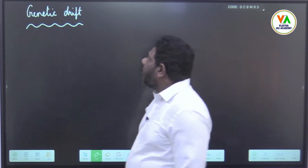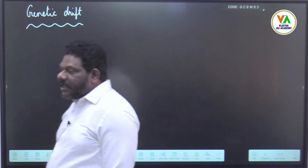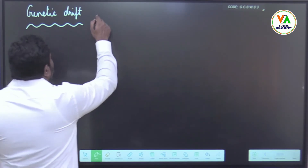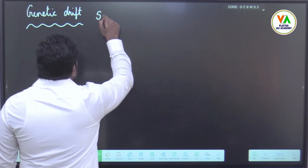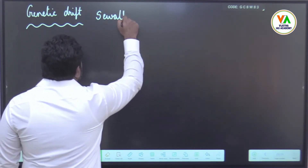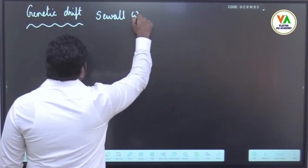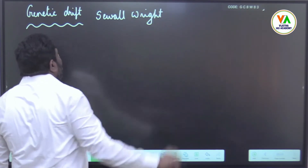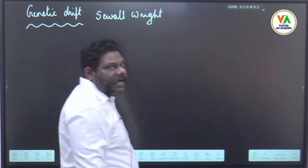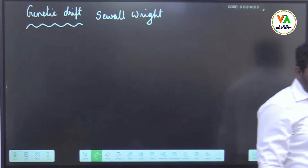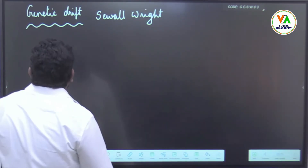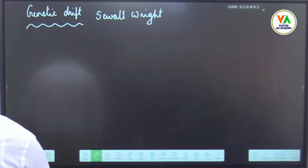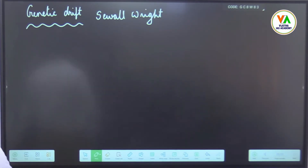Deviation from the normal gene pool is called genetic drift. It was given by Sewall-Wright and is therefore also known as the Sewall-Wright effect. Drift means deviation or change.